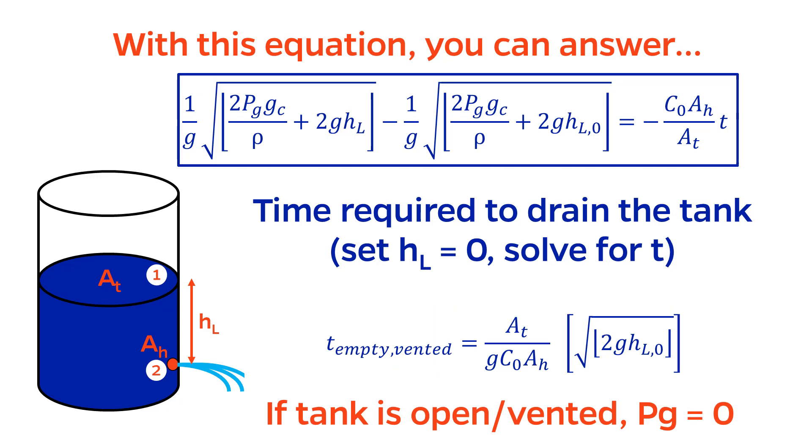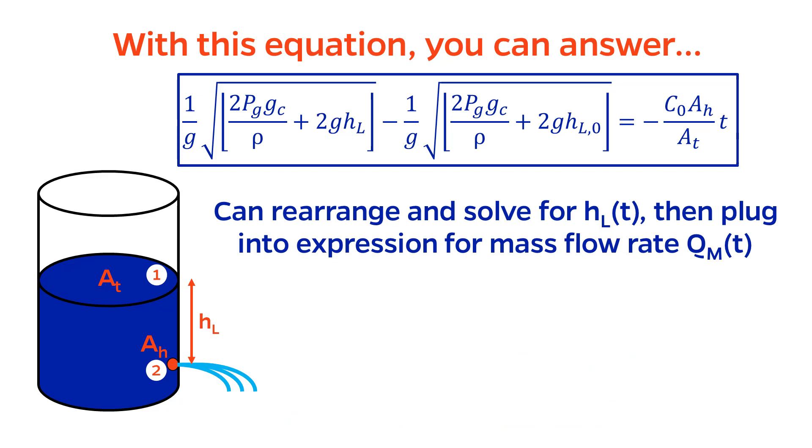You could go one step further and set PG equal to zero if you're analyzing a tank that is vented or open to the atmosphere, since the pressure inside will be atmospheric. You could also rearrange this equation and solve for HL as a function of T. You can then obtain an expression for the mass flow rate QM in terms of T, which is quite handy.